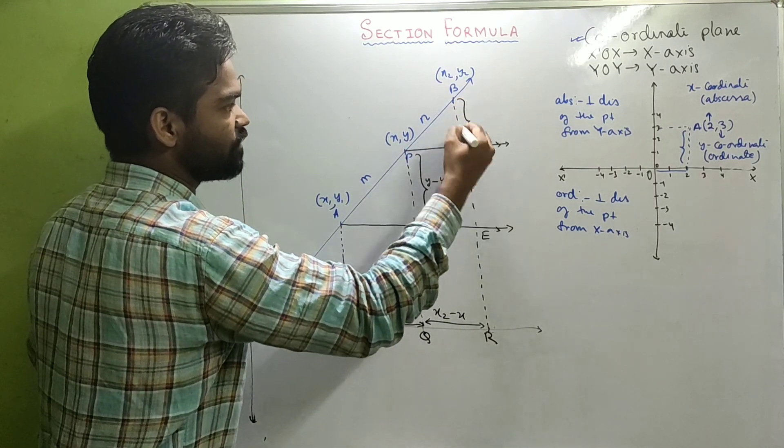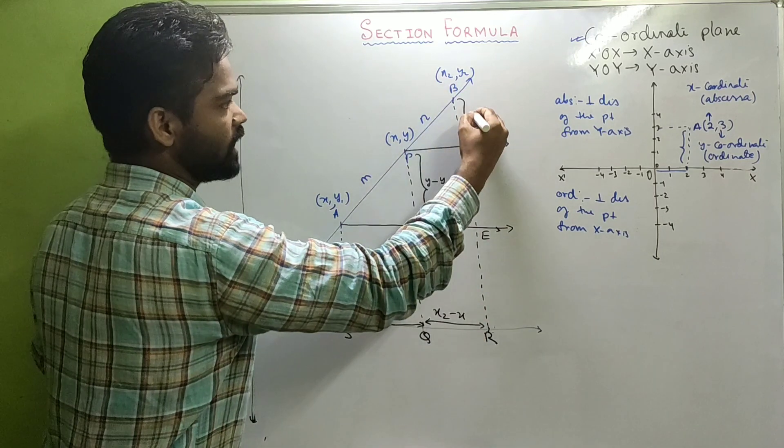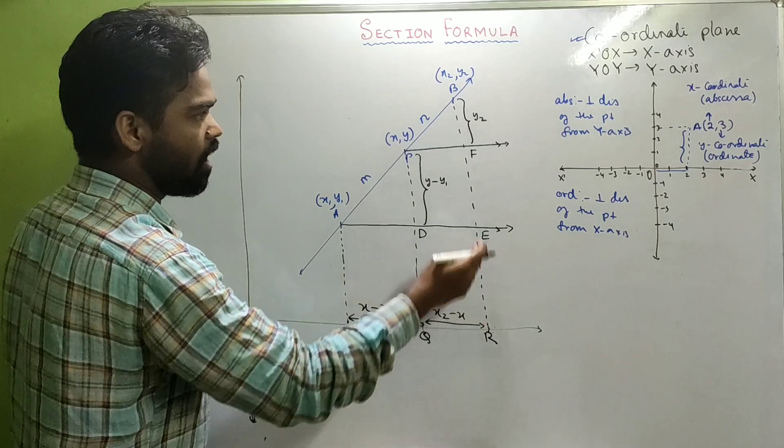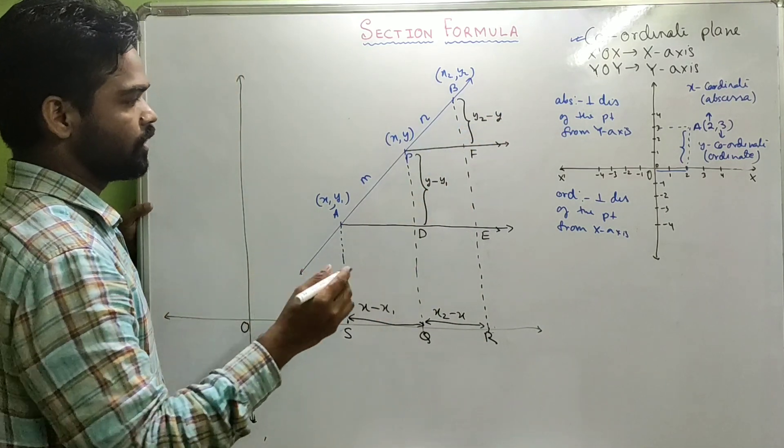Similarly, BF is nothing but BR, which is Y2, minus RF, which is Y.